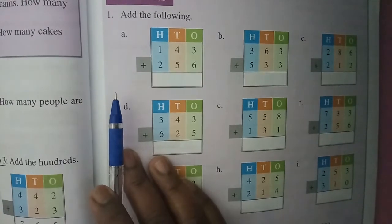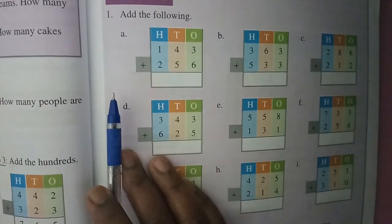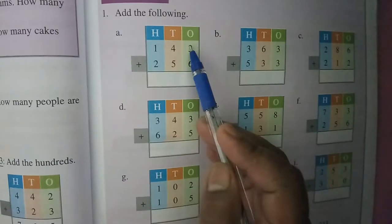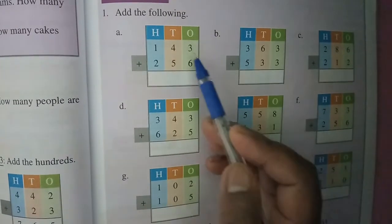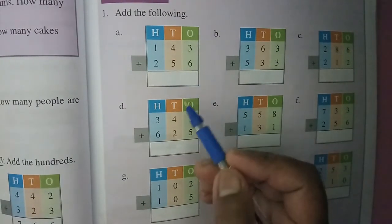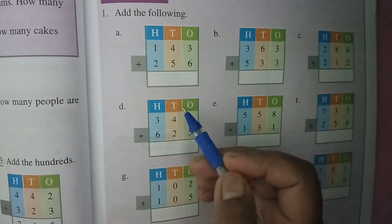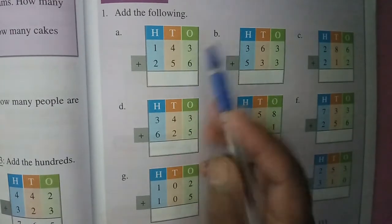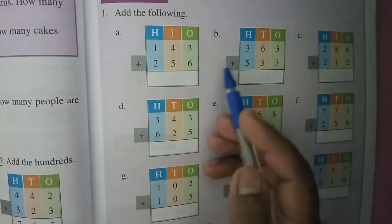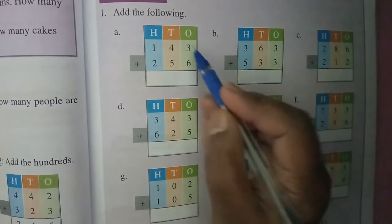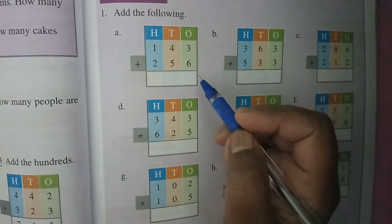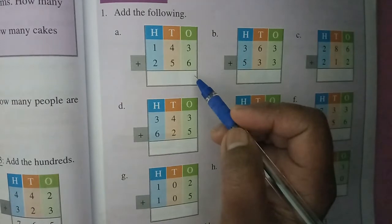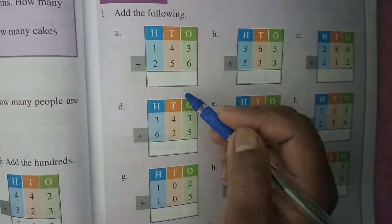So as we all know when we do addition we have to start from ones place only, children, that means three and six we should add first. When we add three and six that means three in the mind and six in the hand, or you can also use lines, whichever is comfortable for you, no problem.